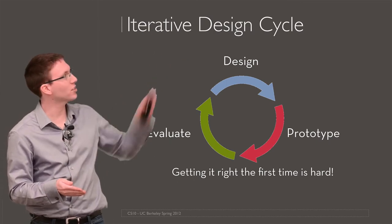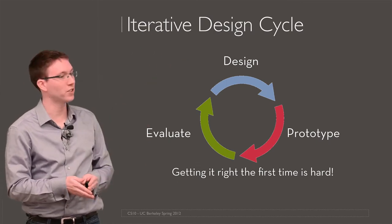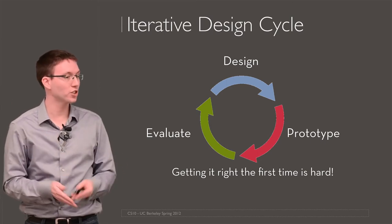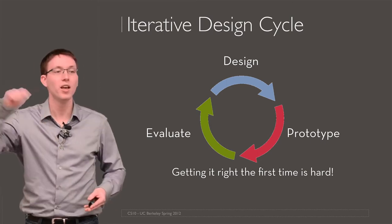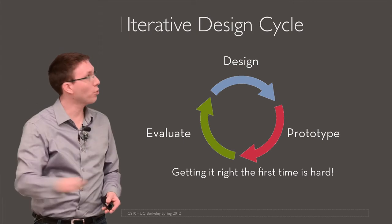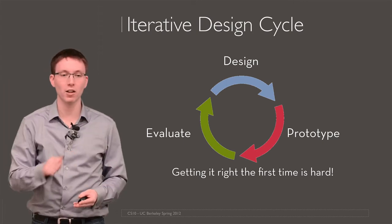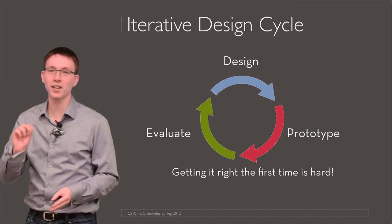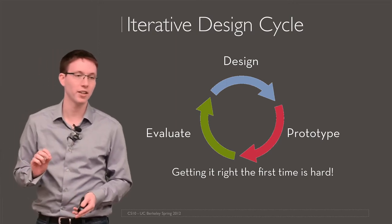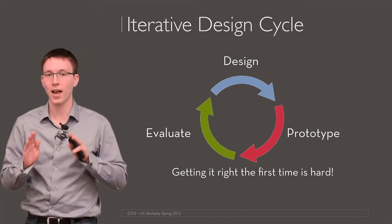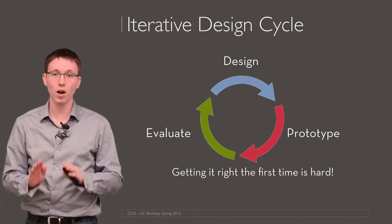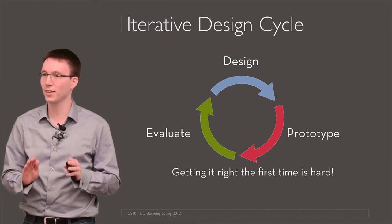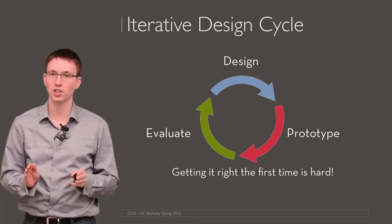So we go into a next phase of design, build a next prototype that may be more complete and more polished than the earlier one, evaluate that again, and we go through that cycle until we run out of time or budget. The reason that cycle is necessary is that in anything, any product that touches human users, it's really hard to get it right the first time.